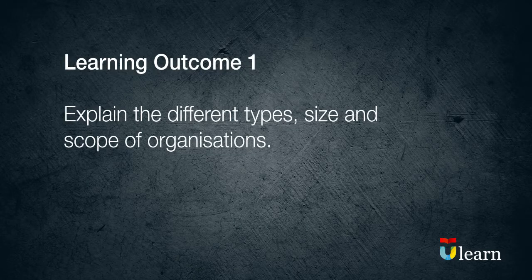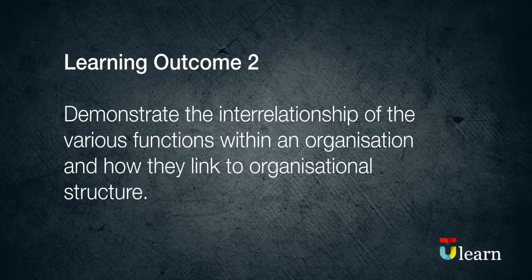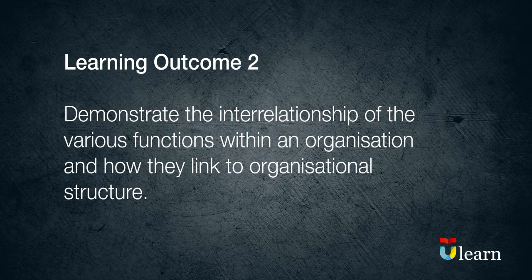Learning Outcome 1 asks us to look at three different aspects of an organisation: we're going to consider an organisation's type, size, and scope. Learning Outcome 2 then focuses our attention on the structure of organisations, so here you need to be able to demonstrate the interrelationships of the various functions within an organisation — like marketing and finance, or production and human resources — and look at how these link to organisational structure.